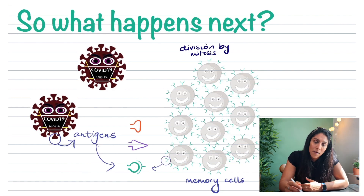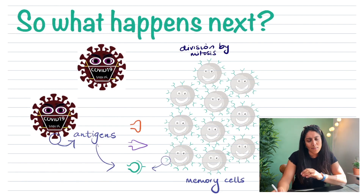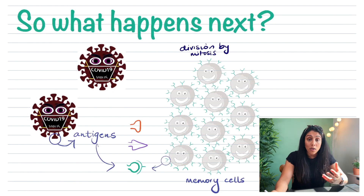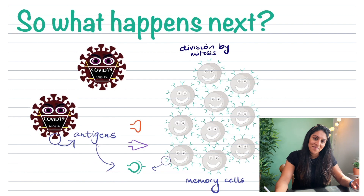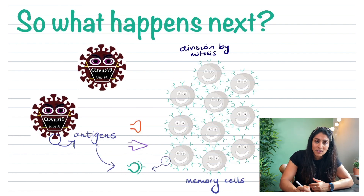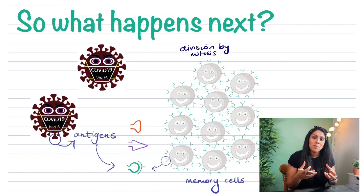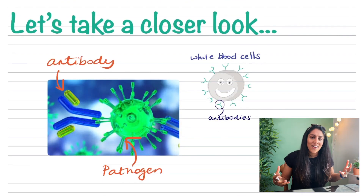We have white blood cells in our body — they are our warriors that fight diseases to protect us. White blood cells release something called antibodies, another key word. Antibodies try to find the correct shape of the antigen found on the pathogen. When they find it, they start to divide by mitosis — that means cell division — and they replicate in large numbers, all with the same shaped antibody, in preparation to be exposed to the virus again.